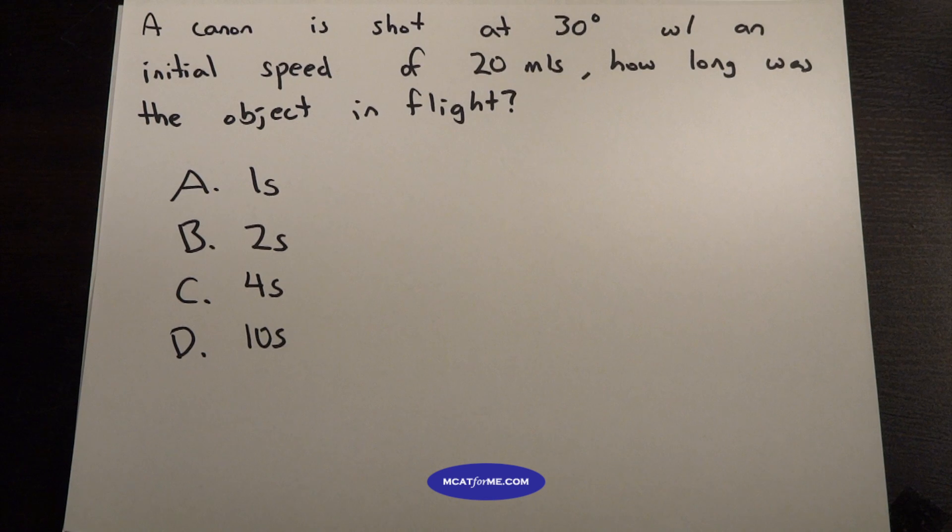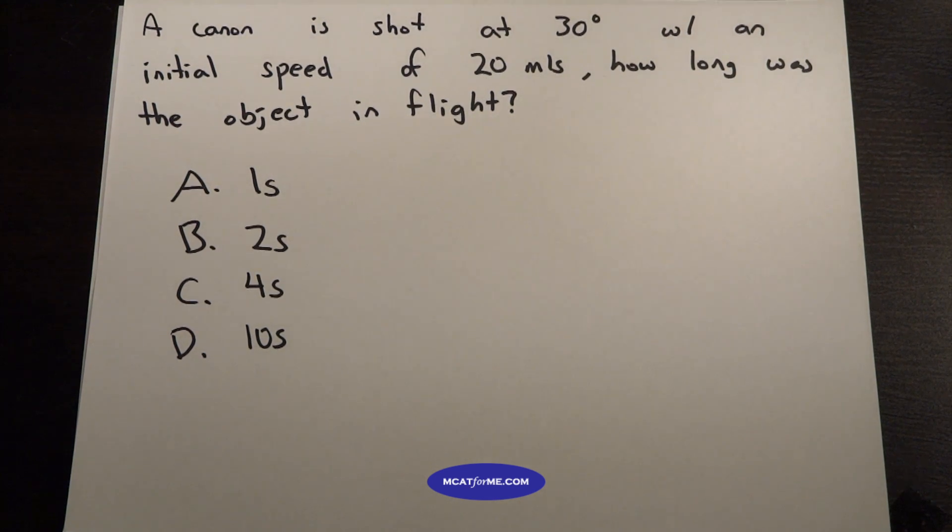So today we have a physics question of the day. It's asking us a cannon is shot at 30 degrees with an initial speed of 20 meters per second. How long was the object in flight?